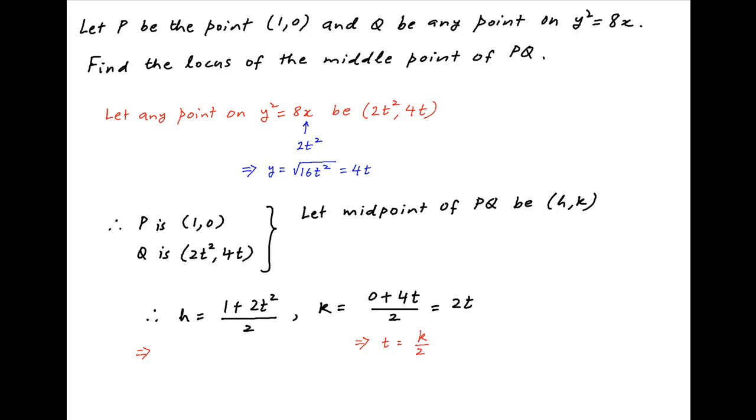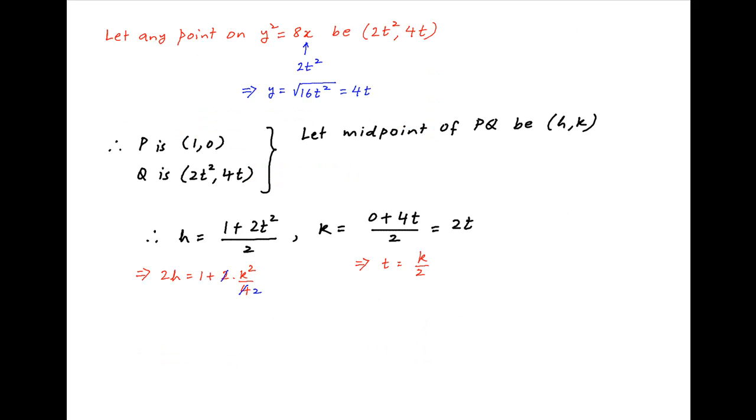Substituting this in the expression for h cross multiplying, we get 2h is equal to 1 plus 2t square which is equal to 1 plus 2 times k square upon 4. Multiplying both left hand side and right hand side by 2, we get 4h is equal to 2 plus k square.